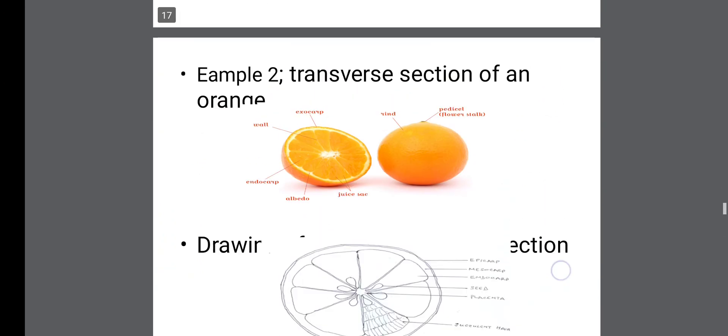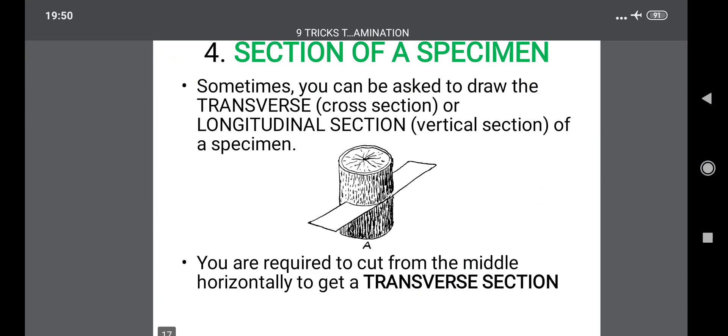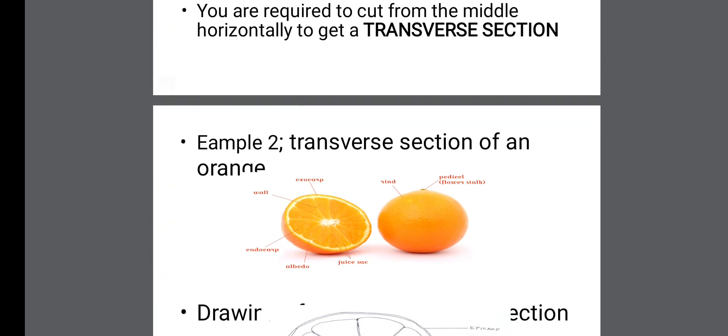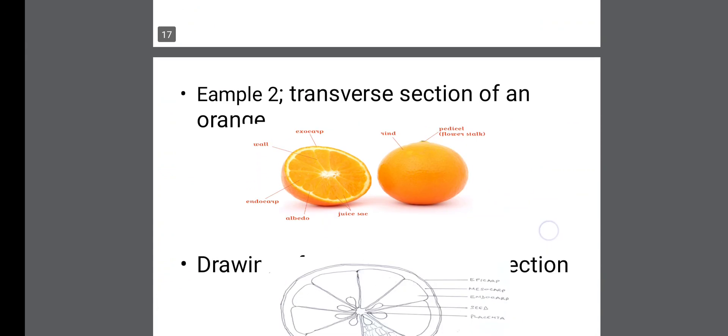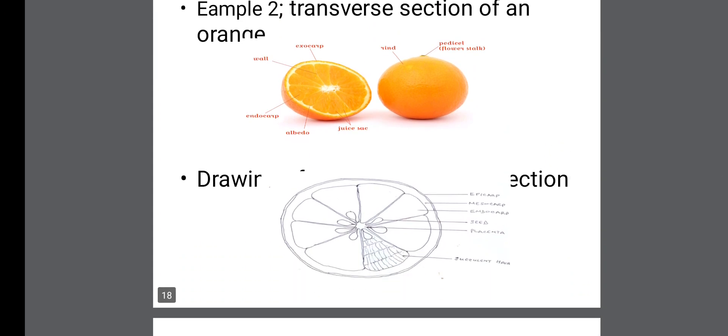When it's being cut from the y-axis, the reverse of the case, you now have the longitudinal view. The second example of transverse section of an orange is the one I have here. Most of us peel orange transversely when we want to sip it. We peel orange transversely. Then this is the diagram.